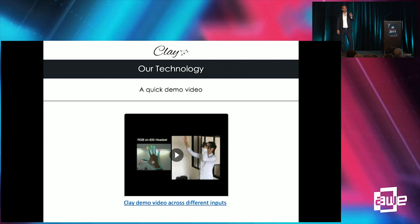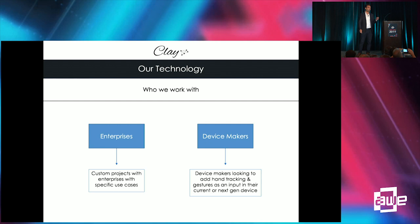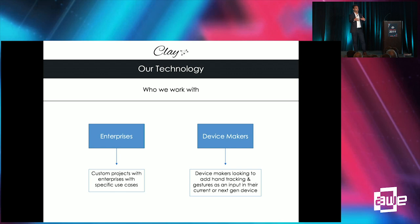I'd love to show a video but we don't have internet access — if you get my contact info I can send it to you. It would show on an 835 headset all the different inputs and what we're capturing over the hand. We work with device makers and enterprises installing AR and VR devices. On the device side, a device maker comes to us and we help figure out what camera module makes the most sense. On the enterprise side, we assist with device selection and getting hand tracking to work if it doesn't come out of the box.